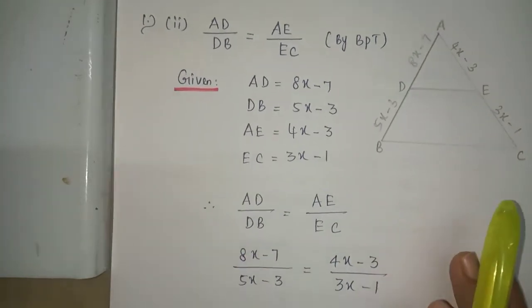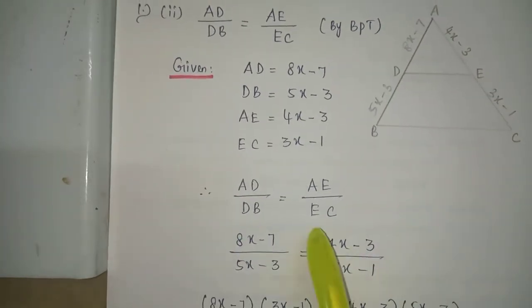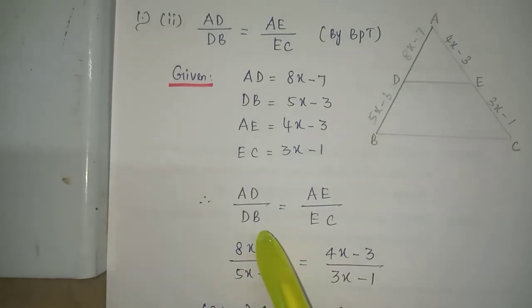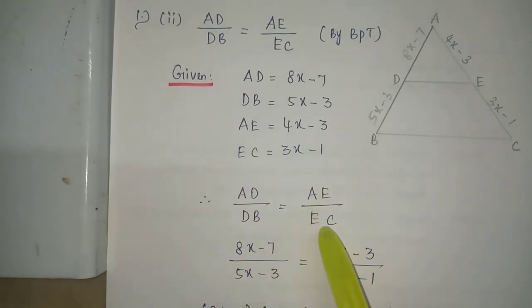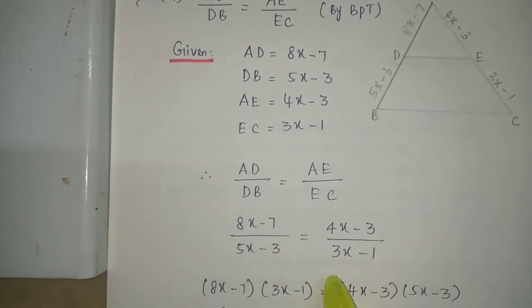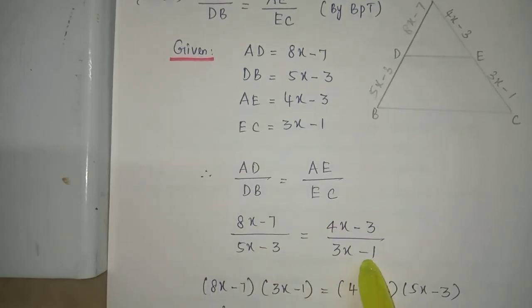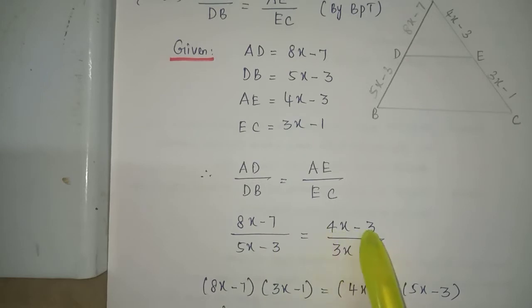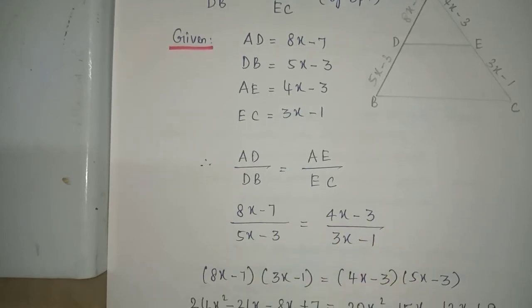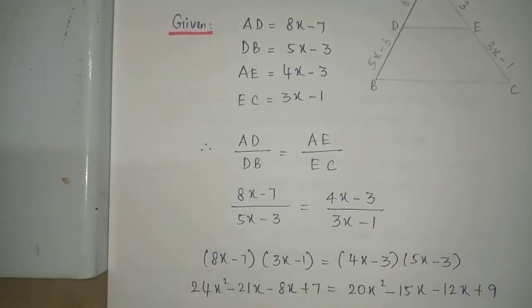By basic proportionality theorem, AD by DB is equal to AE by EC. Substituting the given values, the next step is cross multiplication: (3x minus 1)(8x minus 7) equals (4x minus 3)(5x minus 3).